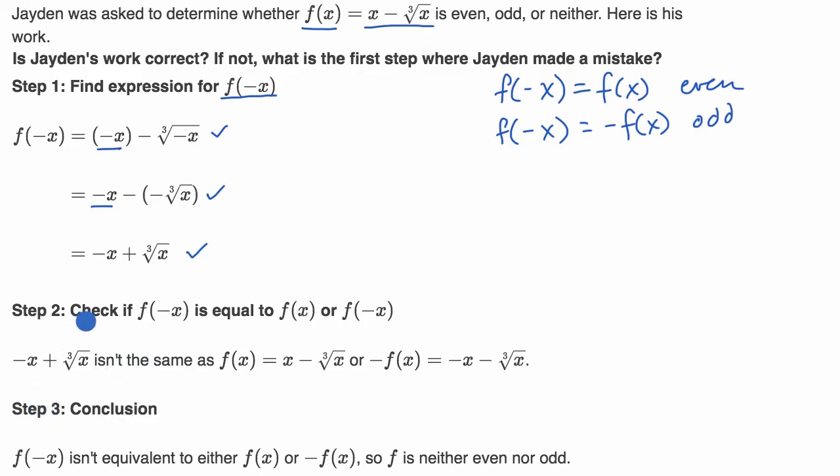And then the next thing he says is, or he's trying to do is check if f(-x) is equal to f(x), or -f(x). So he's going to check whether this is equal to one of them. And so here, Jaden says -x + ∛x, so that's what f(-x), what he evaluated it to be, isn't the same as f(x). And let's see, is that the case? Is it not the same as f(x)?